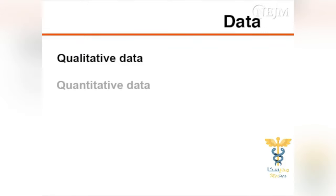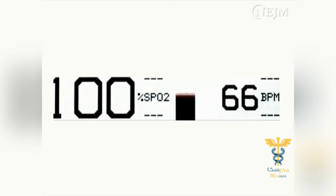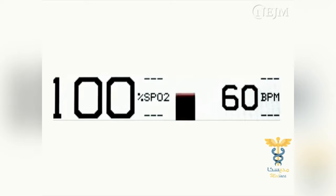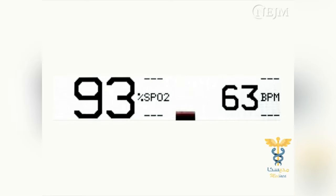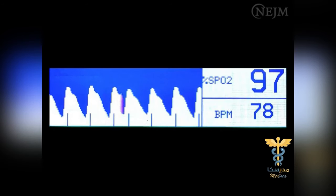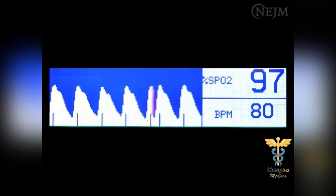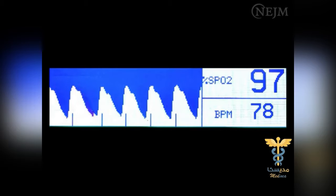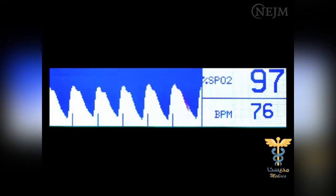Pulse oximetry provides both qualitative and quantitative data. The qualitative data are obtained through the sounds emitted by the pulse oximeter. These sounds correlate with the level of oxygen saturation: a higher pitch indicates higher oxygen saturation, and a lower pitch warns of decreasing oxygen saturation. The pulse oximeter provides quantitative data through the display of a pulsatile waveform that corresponds to the flow of arterial blood. The numbers displayed indicate the hemoglobin oxygen saturation and the pulse.